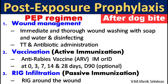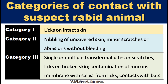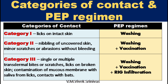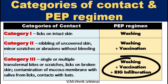Summary of PEP regimen: wound management with immediate and thorough washing with soap and water and disinfection; TT and antibiotic administration; anti-rabies vaccination on days 0, 3, 7, 14 and 28, with 90th day optional; and RIG infiltration around the wound. Contact with a suspect rabid animal is classified into 3 categories: Category 1 — licks on intact skin; Category 2 — nibbling of uncovered skin, minor scratches or abrasions without bleeding; Category 3 — single or multiple transdermal bites or scratches, licks on broken skin, contamination of mucous membrane with saliva, or contacts with bats. For Category 1: washing is mandatory. For Category 2: washing plus vaccination. For Category 3: washing, vaccination and RIG infiltration.